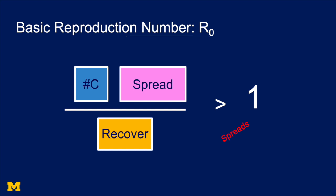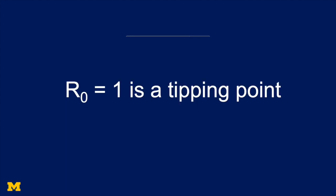If the basic reproduction number is bigger than one, the disease spreads. If the basic reproduction number is less than one, the disease does not spread. So R0 equals one is a tipping point. Less than one, no epidemic. Bigger than one, you get an epidemic.